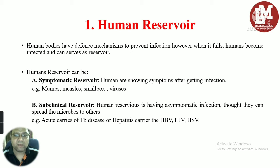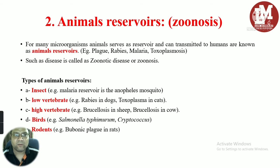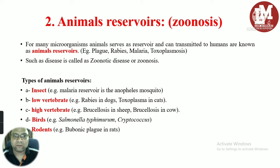Other examples of subclinical reservoirs include hepatitis B infection, HIV, and herpes simplex virus — these are just a few examples; there could be many more. The second major category is animal reservoirs. For many microorganisms, animals serve as reservoirs and can transmit them to humans. Diseases transmitted from animals to humans — such as plague, rabies, malaria, and toxoplasmosis — are called zoonotic diseases, or zoonoses.